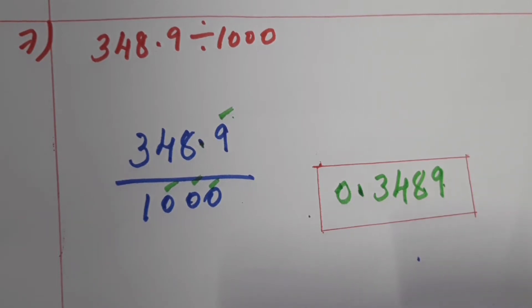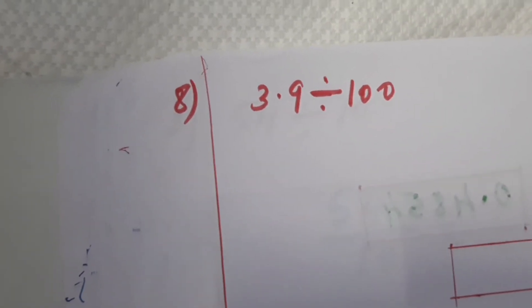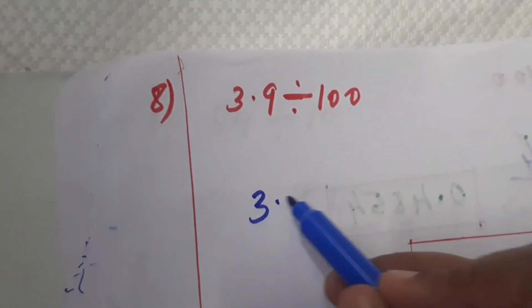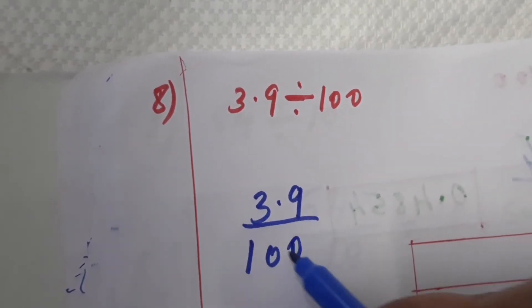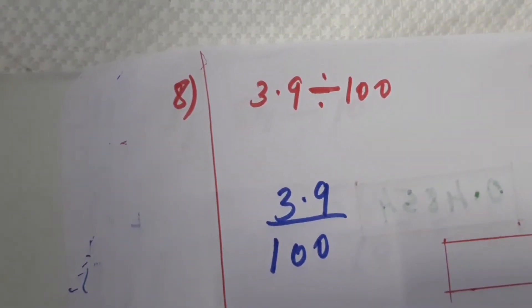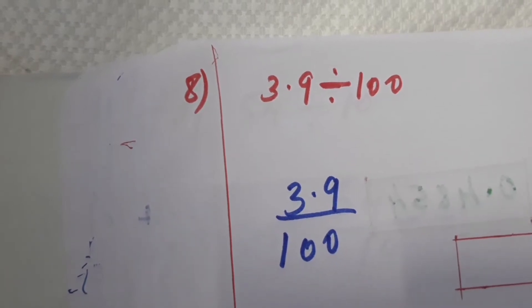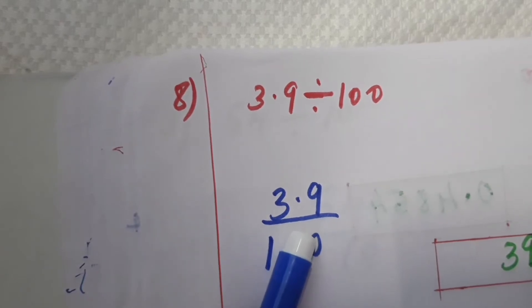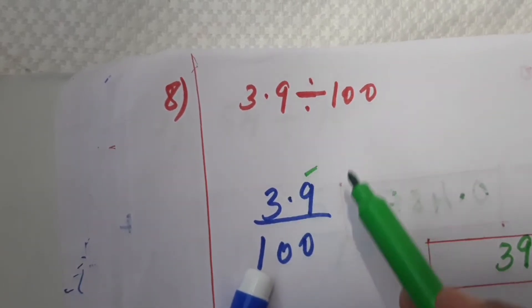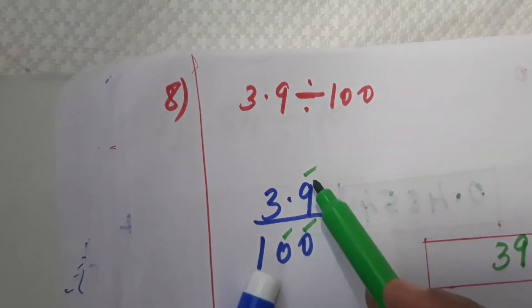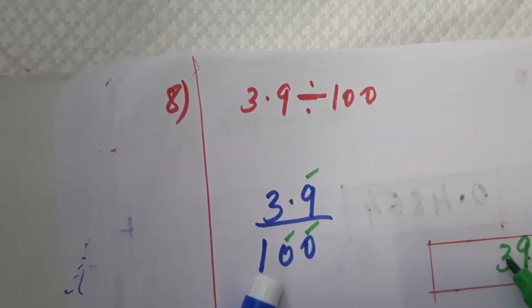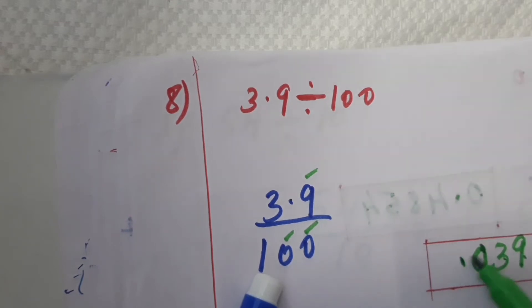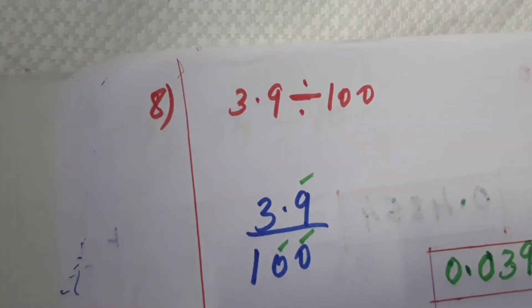Now the eighth question: 3.9 divided by 100. Write it in fraction form, then write the numerator as 39 without the decimal point. After the decimal point there is one digit, and there are two zeros — total three digits. Count one, two, three from the right, place the decimal point and add a leading zero. The answer is 0.039. You can verify by long division and you will get the same answer.